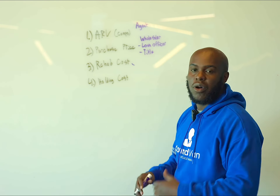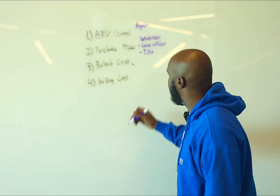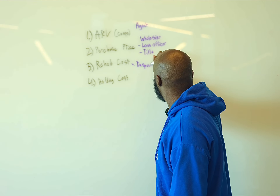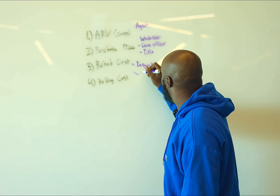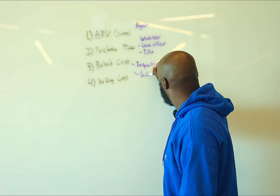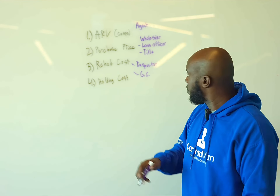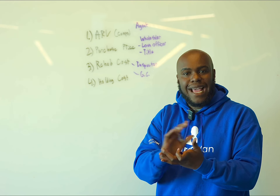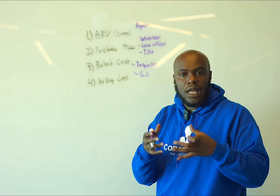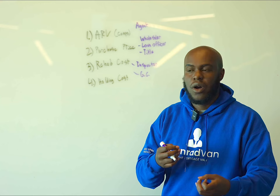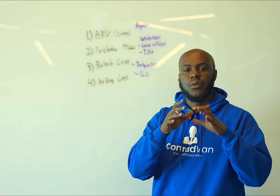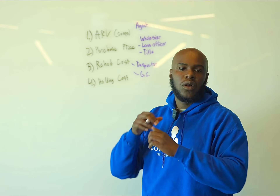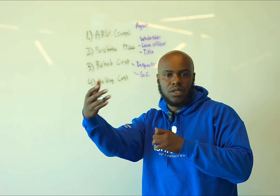For your rehab costs, there are two main parties involved. One will be an inspector — they can go in and take an x-ray, typically, of the property and let you know what's wrong with it. The other will be a general contractor. The general contractor will look at the property and say, 'Hey, we're going to knock this wall down, we're going to paint, we're going to do the siding.'